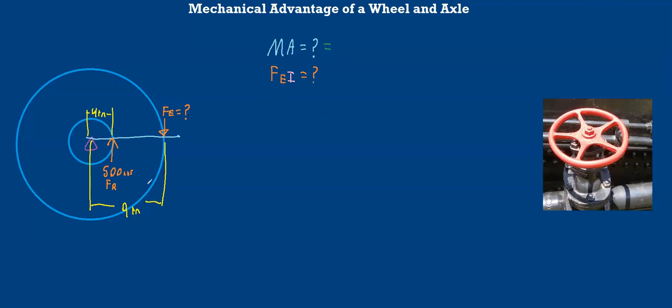And so let's start with the mechanical advantage. And since we're given two distances, we can use our IMA-DIR equation. Our IMA is equal to our DE divided by our DR. And we know what our distance effort and our distance resistance are. Our distance effort is going to be the distance from our center to our effort force. So this will be our distance effort. And this 4 inches will represent our distance resistance. And so we can say our distance effort is 9 and our distance resistance is 4 inches.